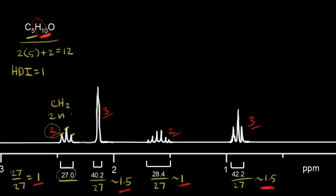The chemical shift for this signal is between 2 and 2.5 ppm — that's the region for a proton next to a carbonyl. This makes a lot of sense because we calculated an HDI of one indicating a double bond may be present, and we need to account for the oxygen in our molecular formula. So let's draw in a carbonyl, with these CH2 protons next to it.